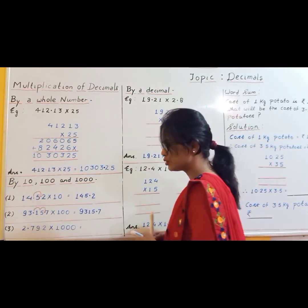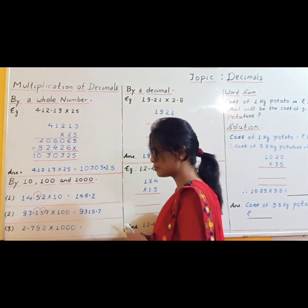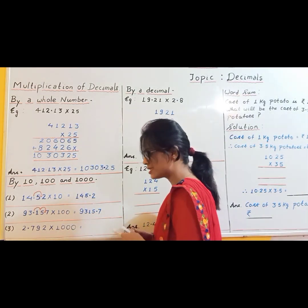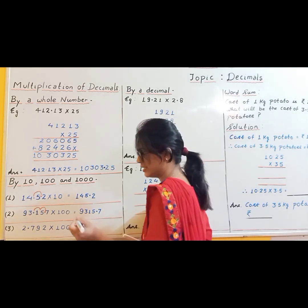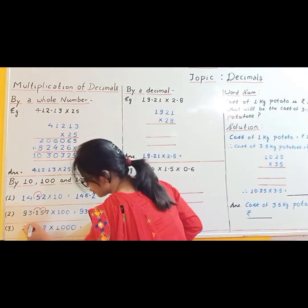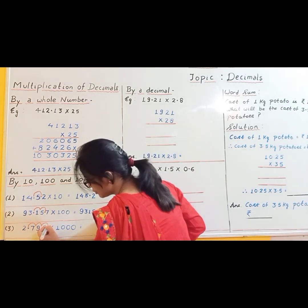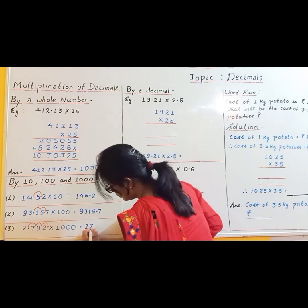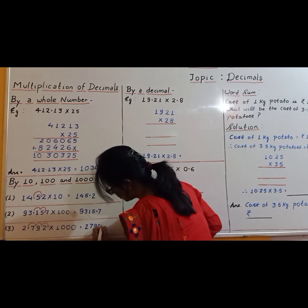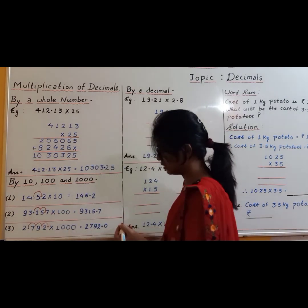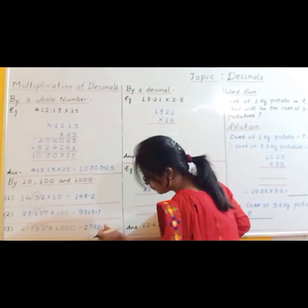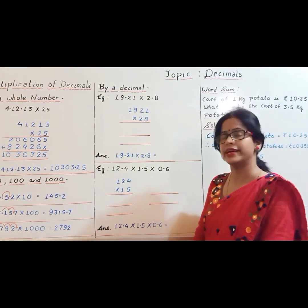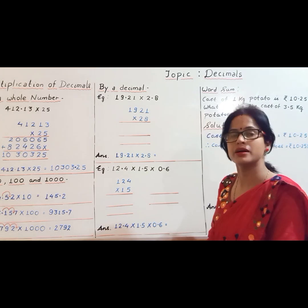Next example: 2.792 is multiplied by 1000, meaning three zeros. So the decimal will be shifted to the right-hand side by three places — one, two, and three. The answer will be 2792.0, and since there is no need to write the zero after the decimal point, the answer is simply 2792. Next is multiplication of a decimal by a decimal.